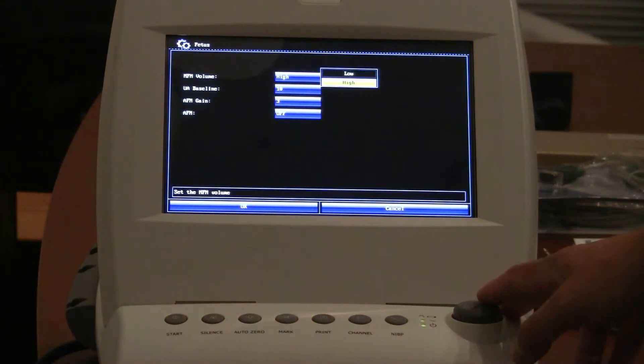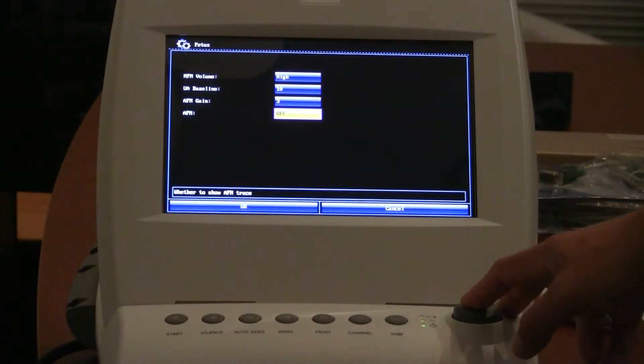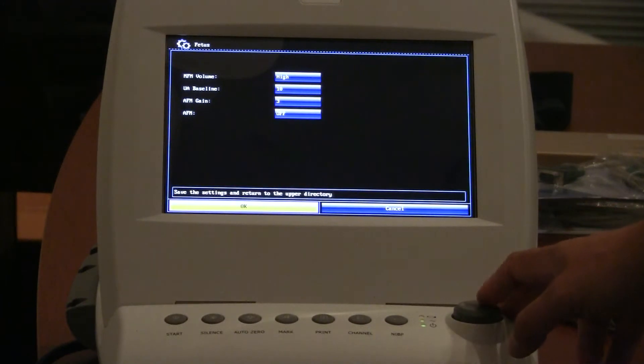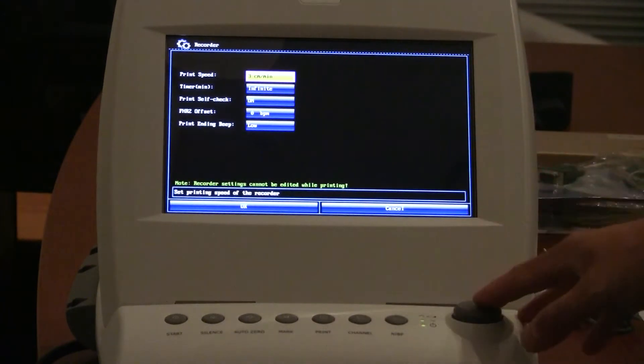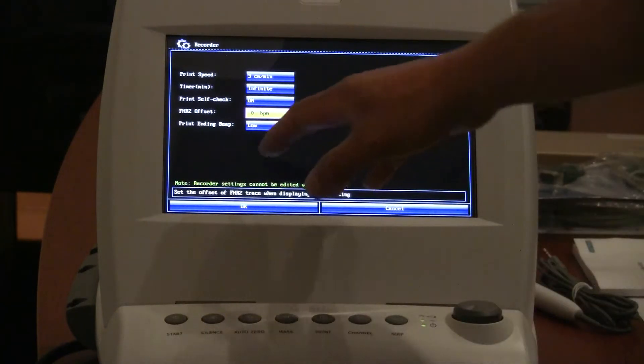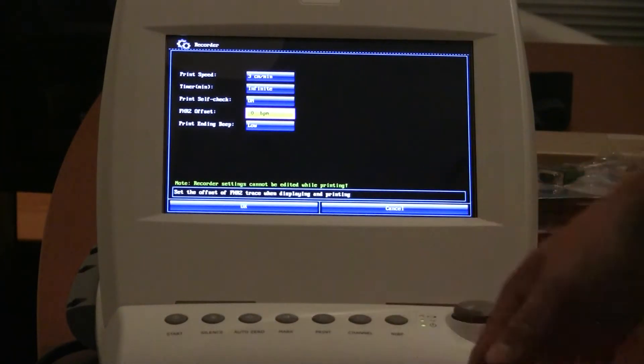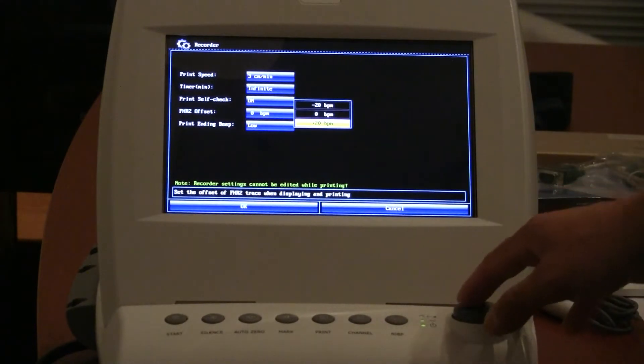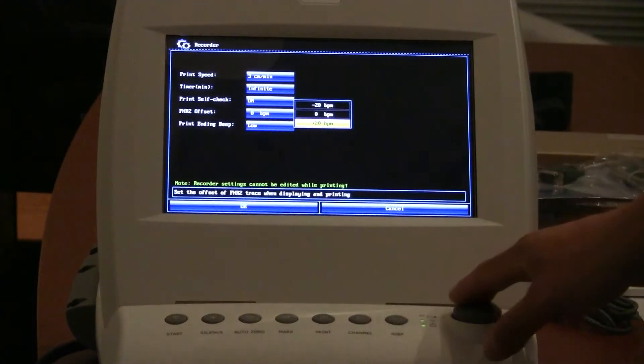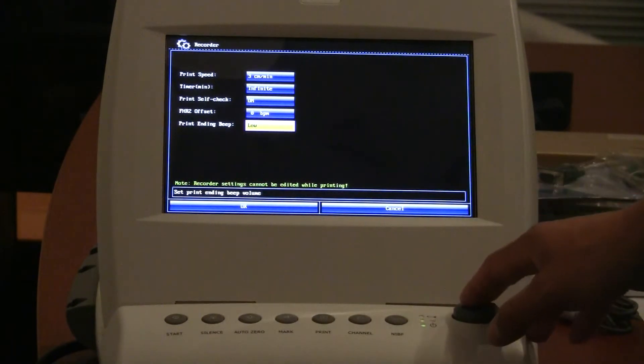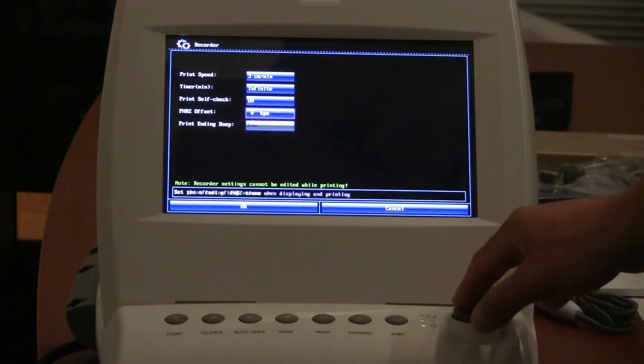Fetal movement is set to high. You can adjust it here to high or low. Your baseline, you can adjust it here. Your gain, adjust it here. And you can turn the auto fetal movement on or off in this section as well. Recorder is going to be your print speed, how fast you want it to print, your timer, your self check, whether or not you want it to be offset for fetal heart rate two if you are monitoring twins. You can change your baseline here to either plus or minus 20.